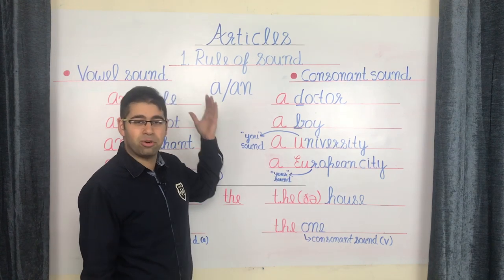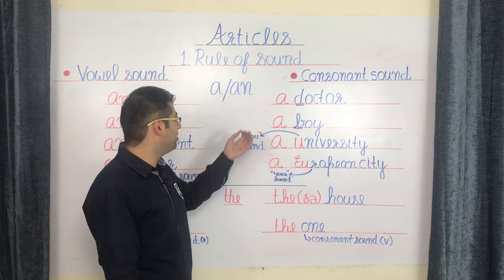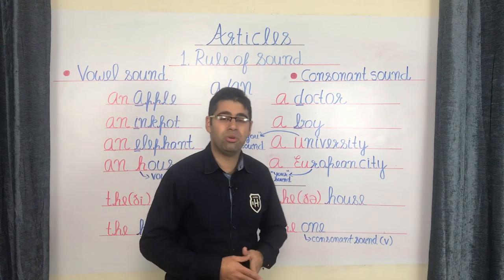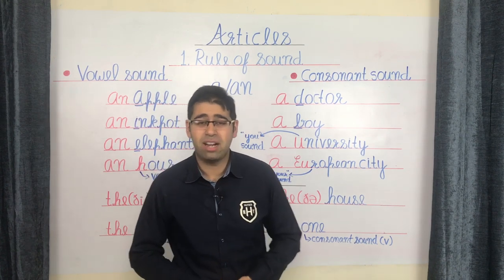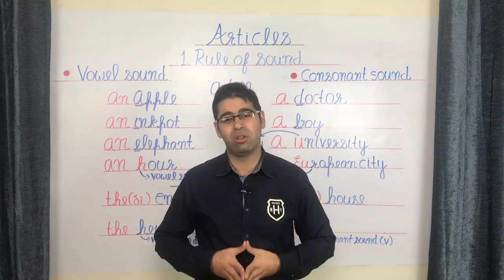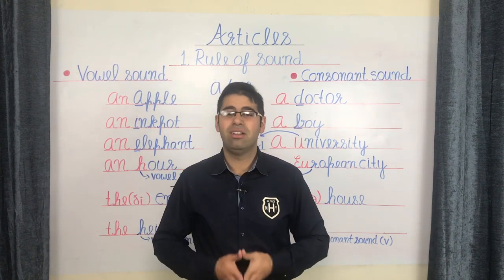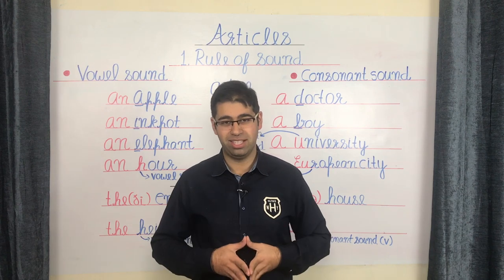And this is the entire rule of sound vis-à-vis A and AN: A for all the consonant sounds and AN for all the vowel sounds.